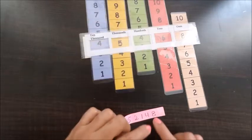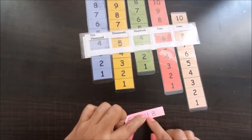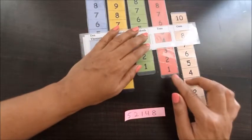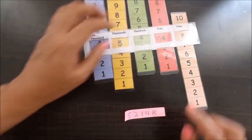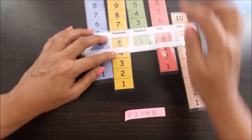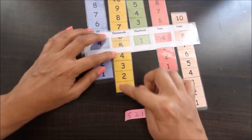Then ones, tens. At the place of tens there is number four, so we'll move the strip to number four. Next is one which comes under hundreds. Next is two which comes under thousands.